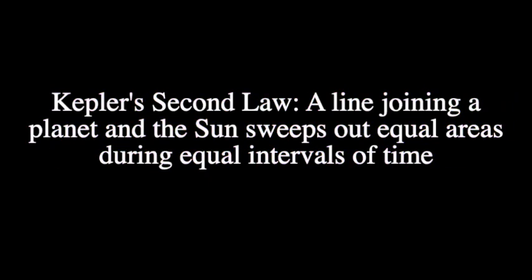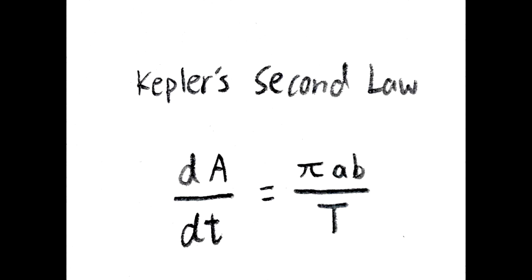The second law states that a line joining a planet and the sun sweeps out equal areas during equal intervals of time, making the mechanical energy of the system constant at any given point during an orbital period. It is important to note, however, that Kepler derived this law independent of the law of the conservation of energy.